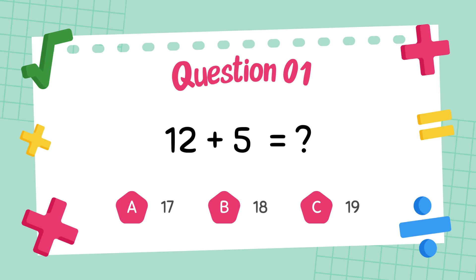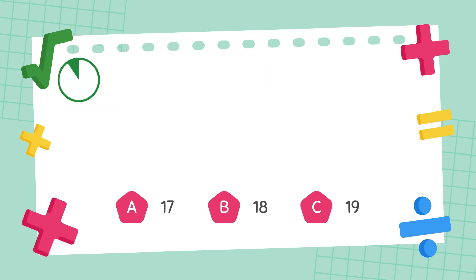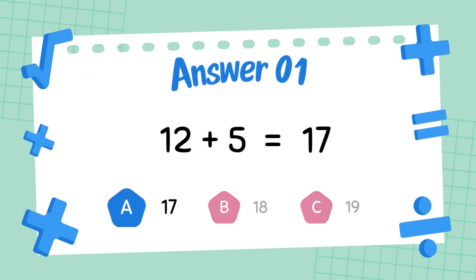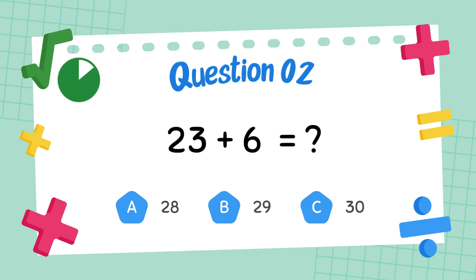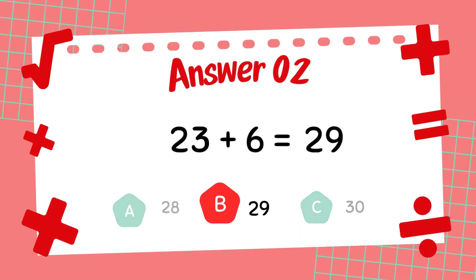What is 12 plus 5? The answer is 17. What is 23 plus 6? The answer is 29.